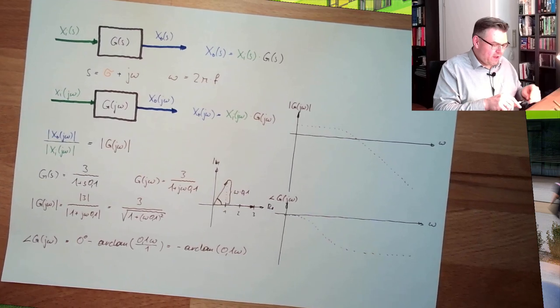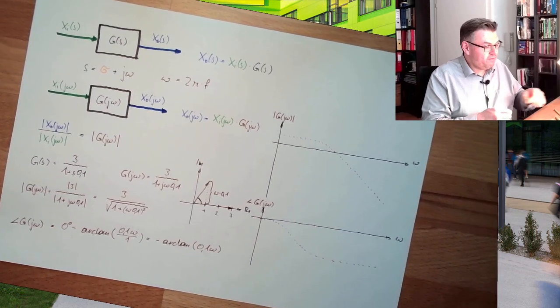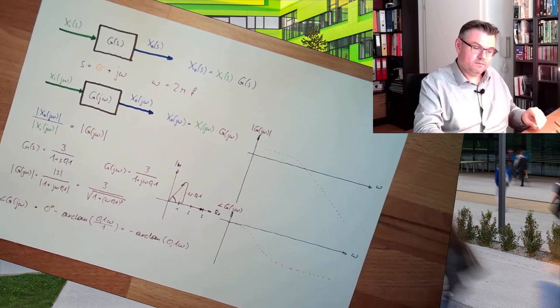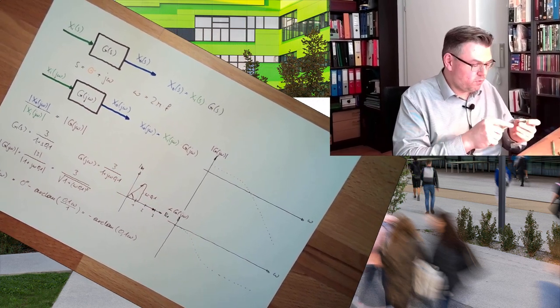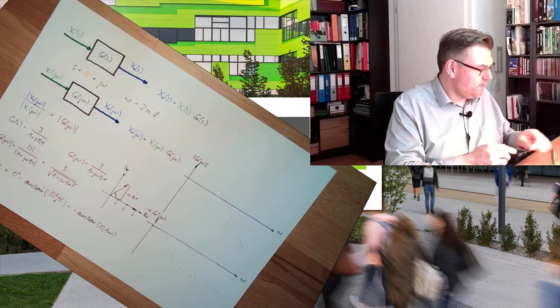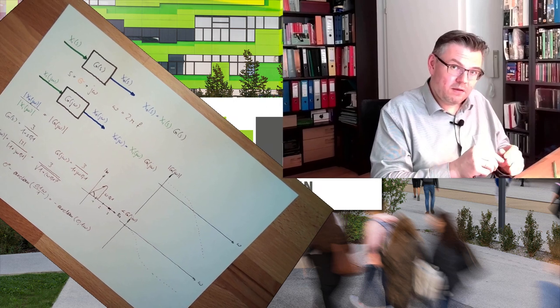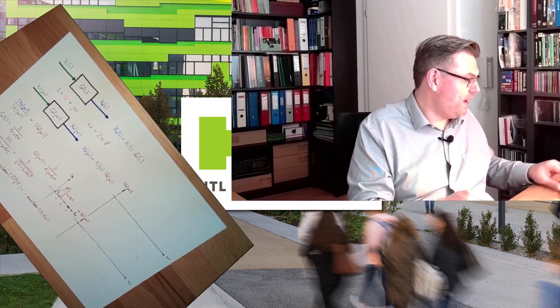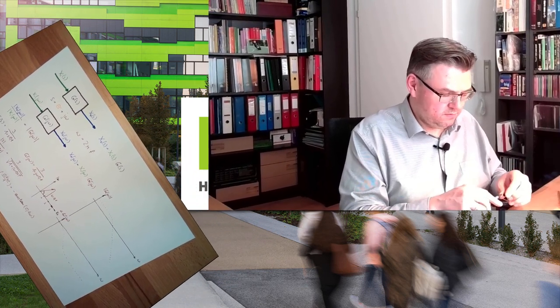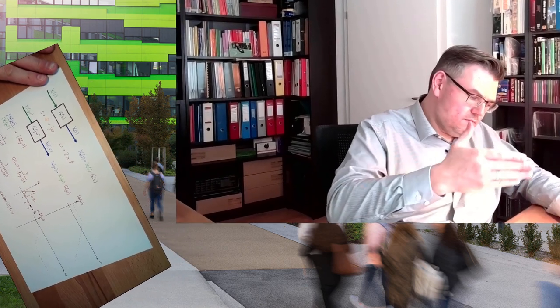The interesting part is that whenever you have a transfer function, you also have the frequency response of exactly that transfer element. We will see, from the Bode plot or the Nyquist plot, that these things have tremendous importance when talking about stability and analyzing control loops. This is why we are talking about this. Frequency response is just a part of the transfer function — formally, you calculate it by just replacing S with jω.